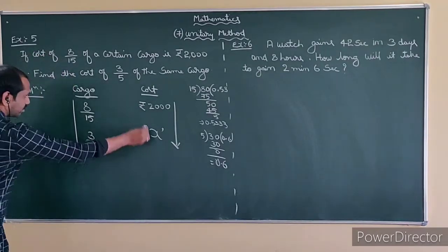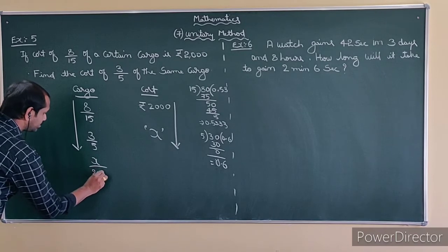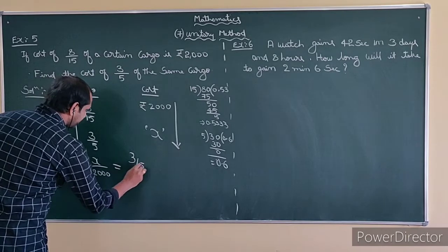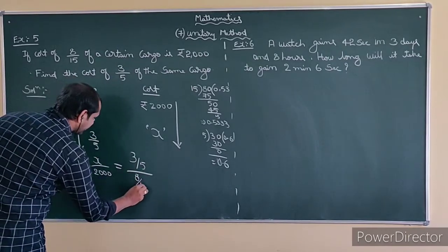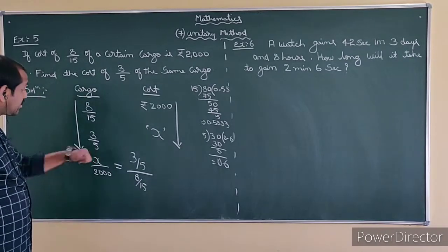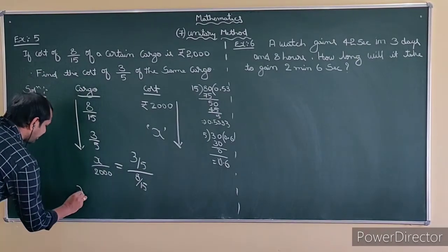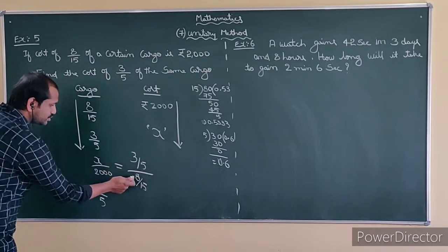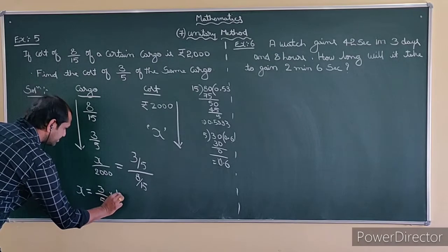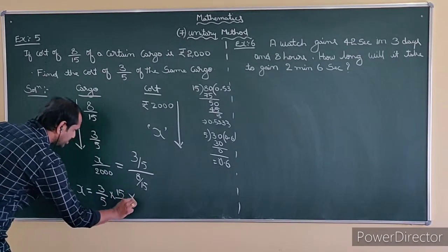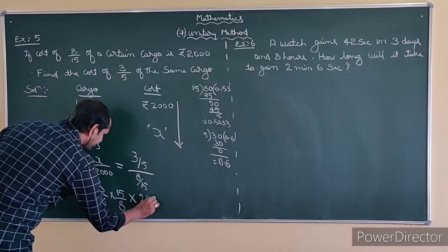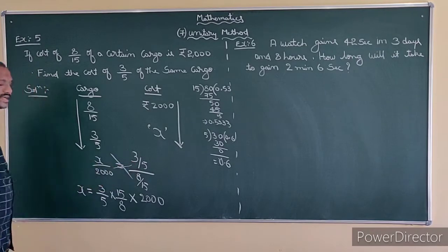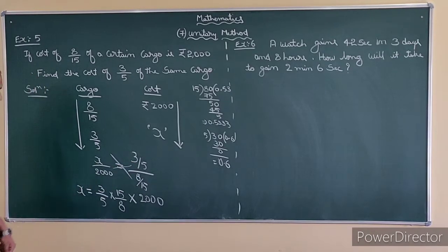Now where direct variation is, you already know how to set it up. It is x/y = 2000. So you have to write 3 by 5 divided by 8 by 3. Now how to write x/y: x is equal — I have 3 by 5, if it goes to write 8 by 15, it becomes 15 by 8. Cross-multiply: when you cross-multiply you will get the same result. Now anything to be cancelled? Yes, we can.